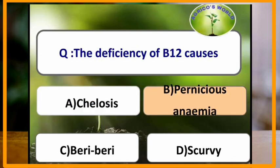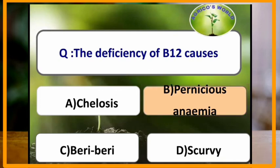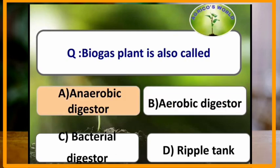The deficiency of vitamin B12 causes which of the following? The deficiency of vitamin B12 causes pernicious anemia. The biogas plant is also called an anaerobic digester.